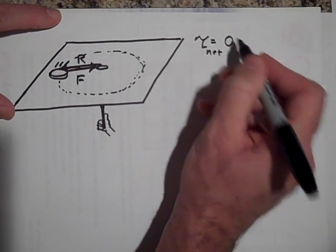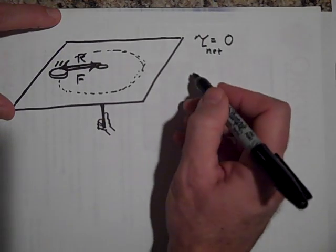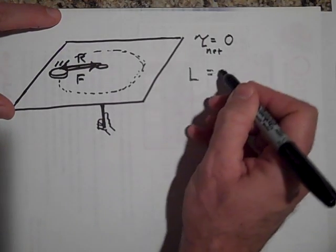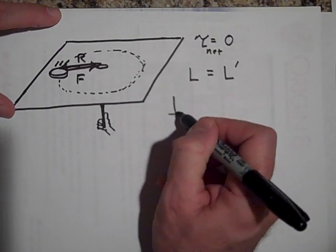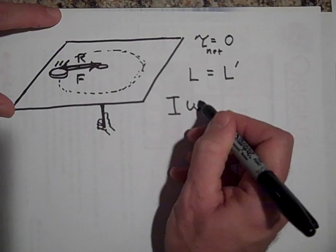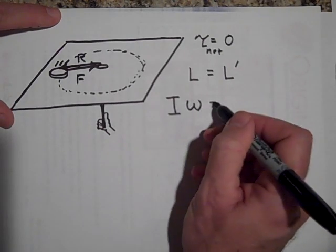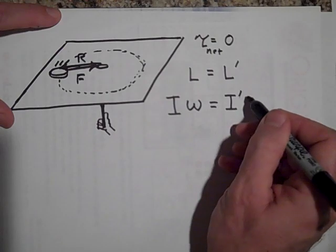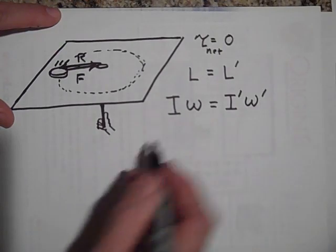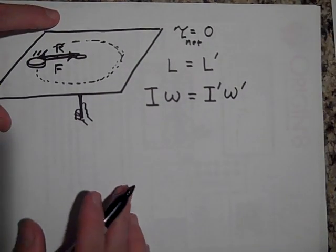So we can say that L equals L prime. So the I at first times the speed it was spinning at first is equal to the I afterwards times the omega afterwards.